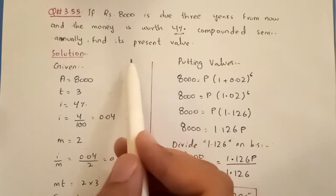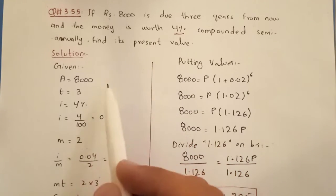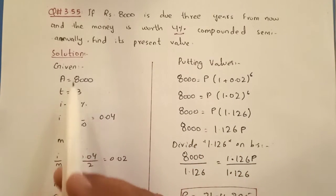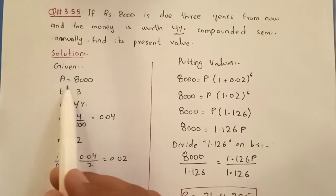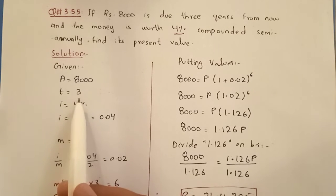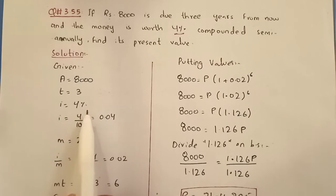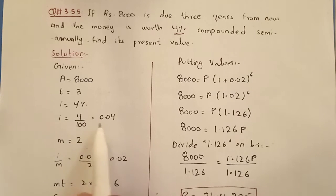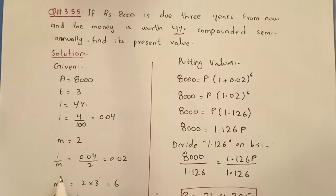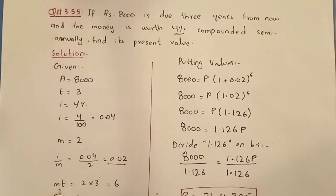So the given values are: A is 8,000, T is 3 years, I is 4%, so dividing by 100, I equals 0.04, and M equals 2. Finding I divided by M: 0.04 divided by 2 equals 0.02. Finding M times T: 2 times 3 equals 6.